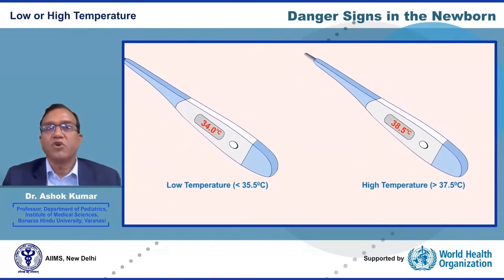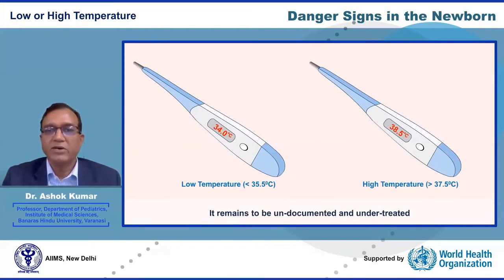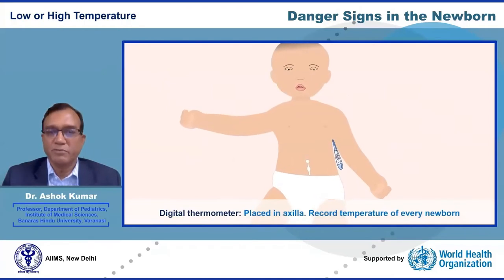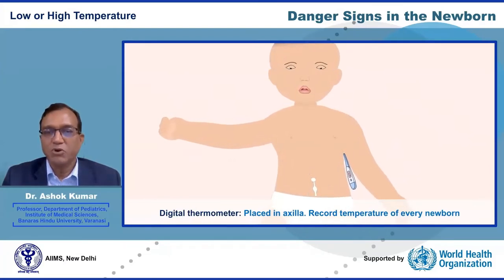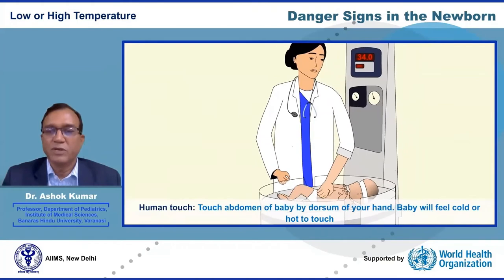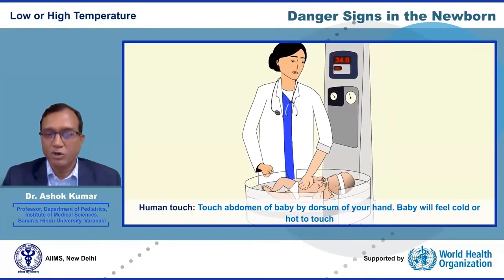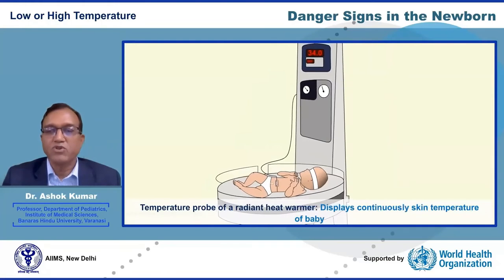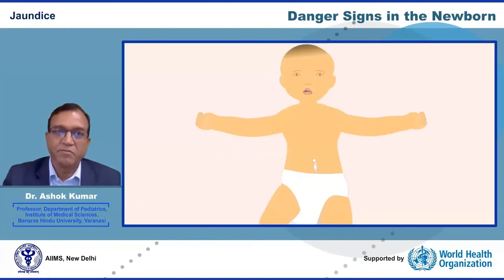Low or high body temperature indicates serious illness such as infection. Hypothermia remains a silent killer because it is often undocumented and untreated. A digital thermometer placed in the axilla is the most commonly used method. Human touch — using the dorsum of a clean hand on the baby's abdomen — can also assess temperature. The temperature probe of a radiant heat warmer can continuously display skin temperature.